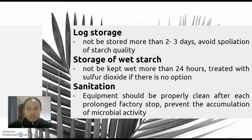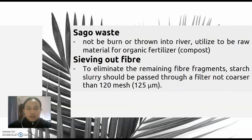Starch should be treated with sulfur dioxide if there is no other option for storing the starch. Next is sanitation: equipment should be properly cleaned after each prolonged factory stop to prevent the accumulation of microbial activity during processing of raw materials. Next is Sago waste: Sago waste from starch extraction should not be burned or thrown into rivers as it may cause environmental pollution; instead it should be utilized as raw material for organic fertilizer compost. Finally, sieving out fiber: to eliminate remaining fiber fragments, starch slurry should be passed through a filter of no coarser than 120 mesh before sedimentation, as remaining fiber may play a role in the microbial degradation of starch.